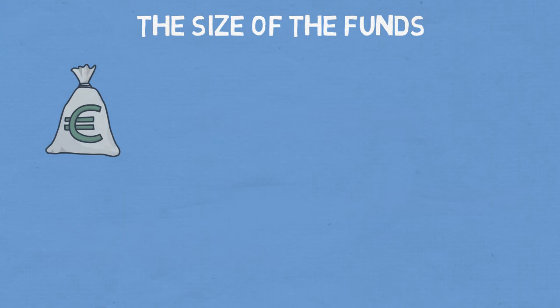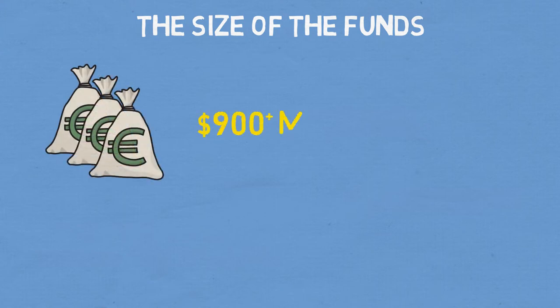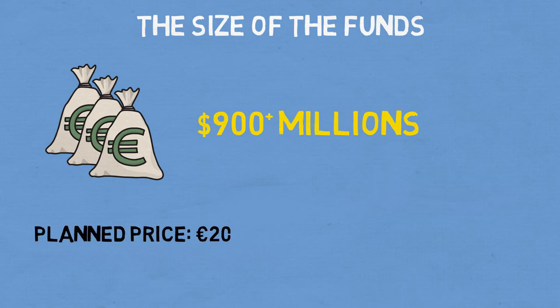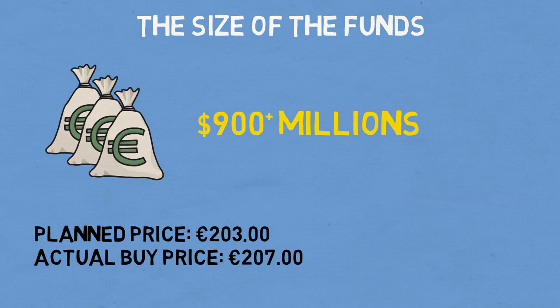Usually actively managed funds manage capital which are on the order of hundreds of millions of dollars. This aspect puts them in a very difficult position the moment they want to invest in a particular company, especially if the company is relatively small. By difficult position, I mean that the buy price could vary significantly from what the trader had in mind.